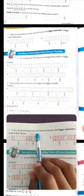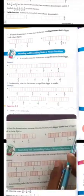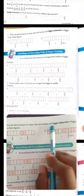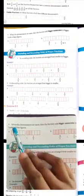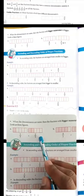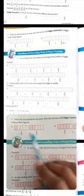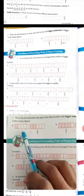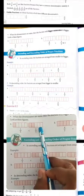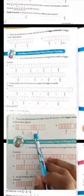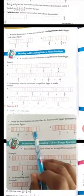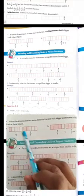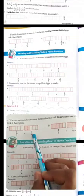When the denominators are the same, then the fraction with the bigger numerator is bigger. For example, 1 upon 5 and 2 upon 5 — the denominator 5 is equal, but the numerators are different: 1 and 2. Since 2 is greater than 1, the bigger fraction is 2 upon 5.